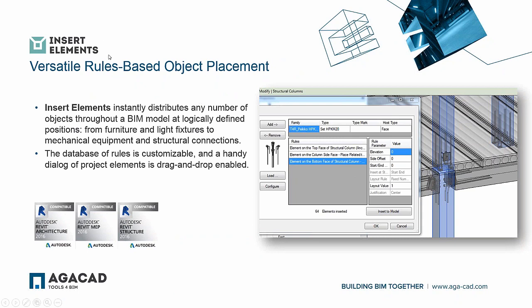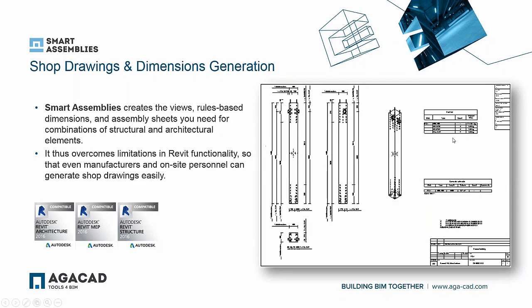Briefly about each solution: Insert Elements lets you create rules and insert many elements according to those rules onto selected elements, solving the bulk insertion of different connection details. Smart Assemblies generates assembly drawings — we'll create dimensions, place views on sheets, and create assemblies automatically with schedules and views placed on the sheet.